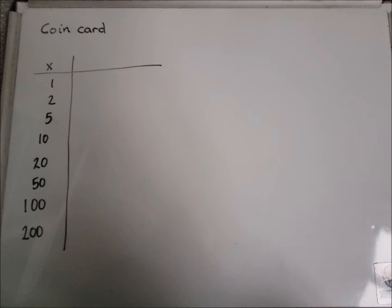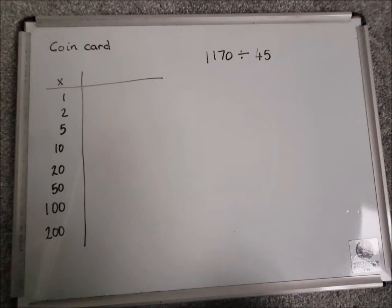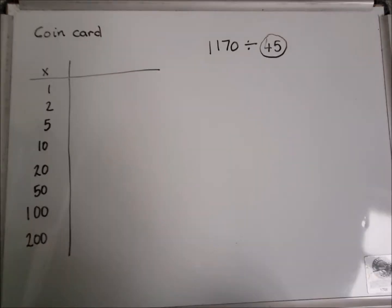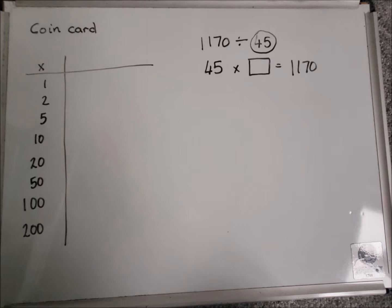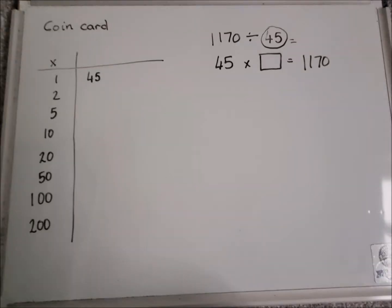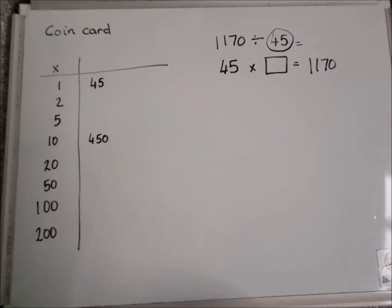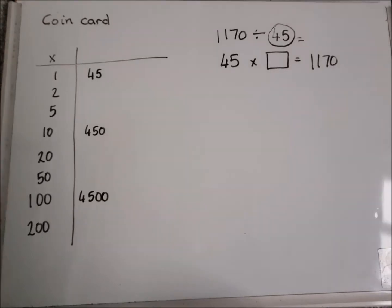So first example, let's imagine we've got 1170 divided by 45. To work this out, we're going to use 45 as the part of the answer. If I use my knowledge of multiplication and division, I know the answer to the sum is going to be the same as 45 times something equals 1170. So we're going to try and work out that something by using 45 in the coin card. So the first thing I'm going to do is complete a coin card for 45. For the 1, I've got 45, times it by 10 gives me 450.